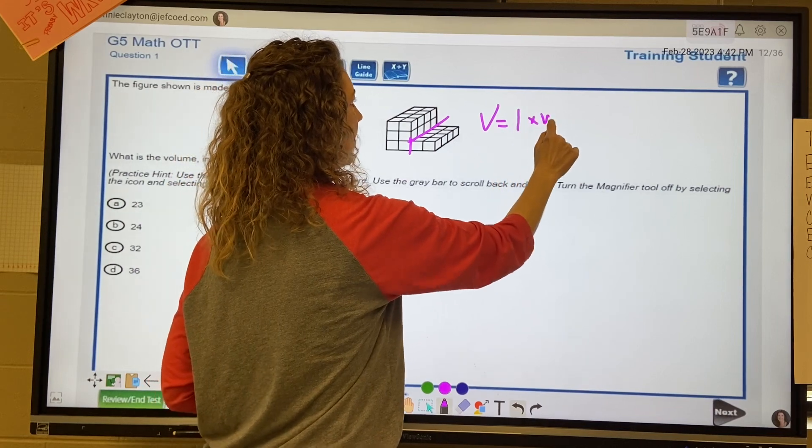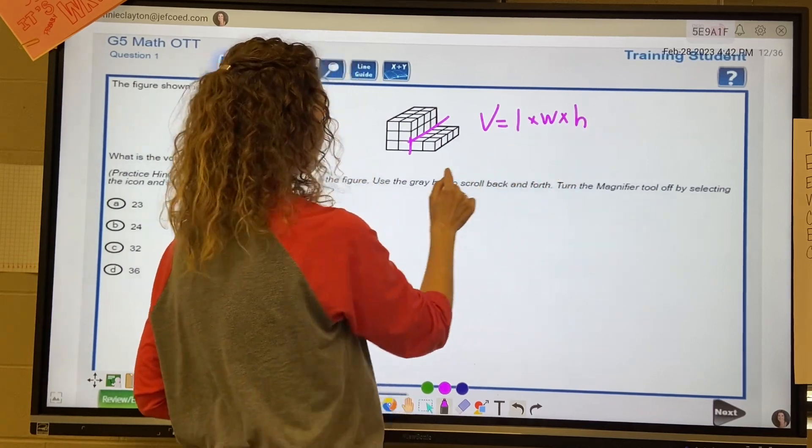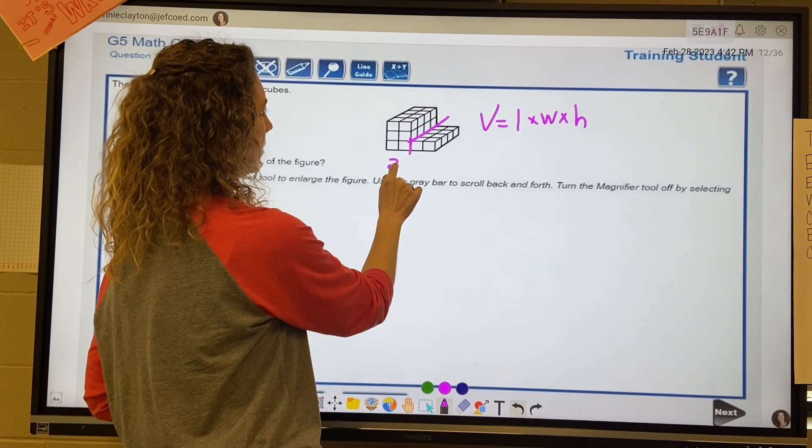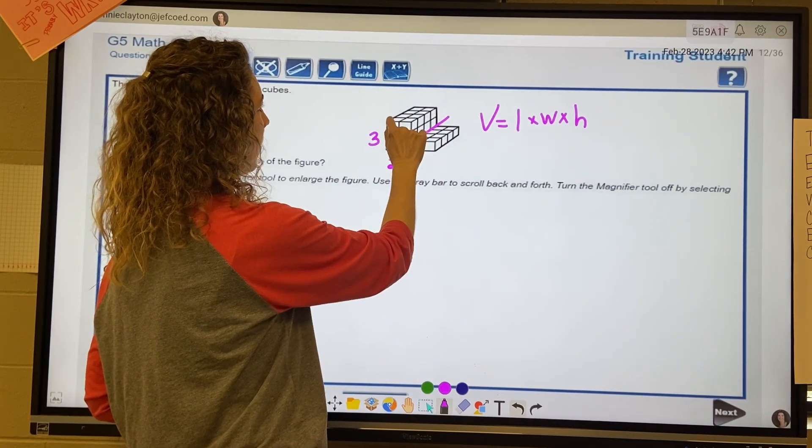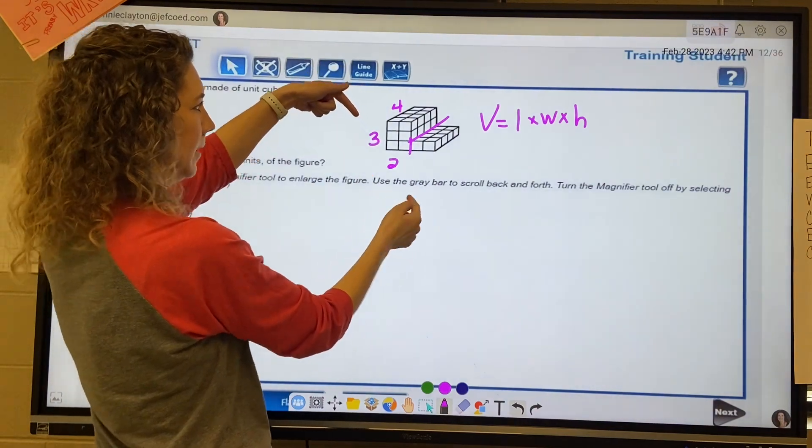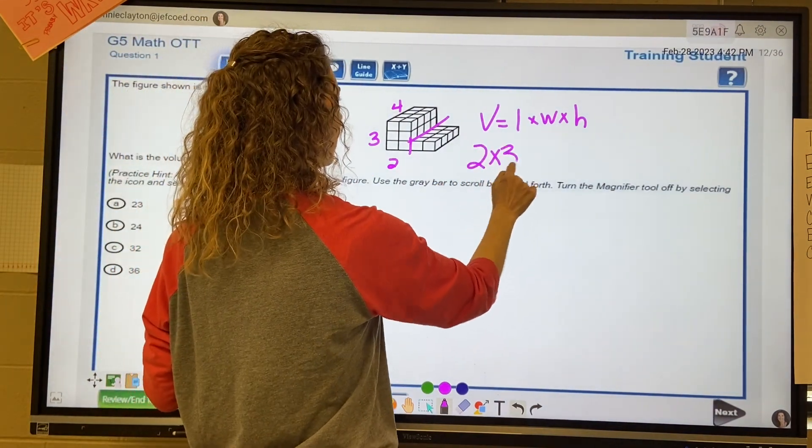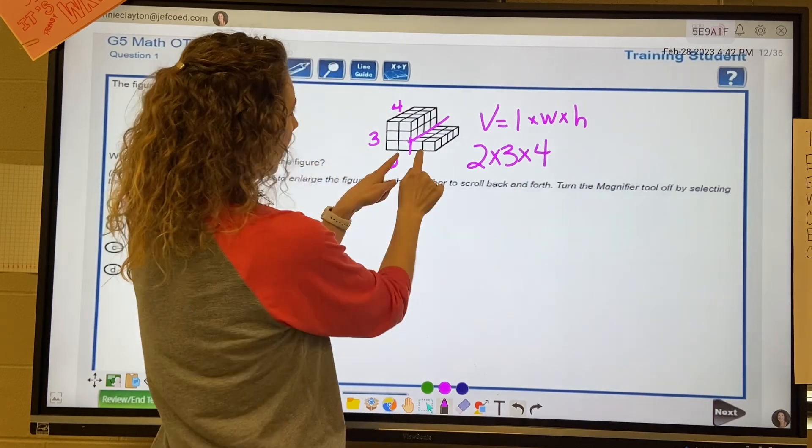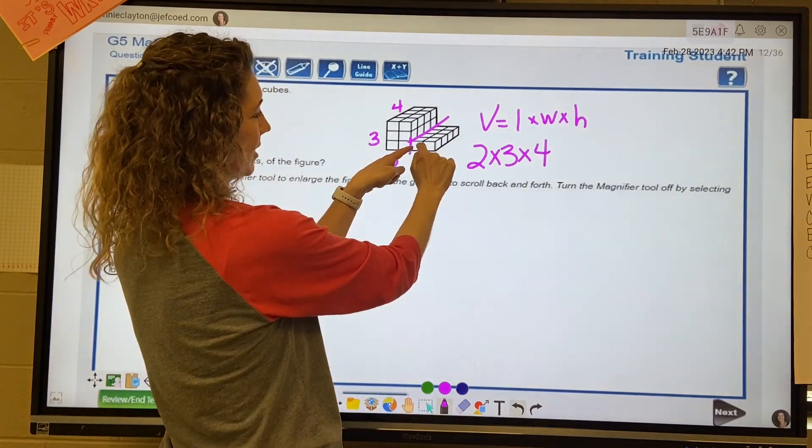So that would be two by three by one. Two, three, four. So that back shape, it's going to be 2 times 3 times 4. And then this one in the front, this one in the front is like a step.